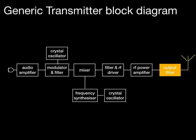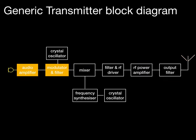Connected to the output filter you must have an RF power amplifier. So that's three boxes ticked without having to remember too much. After the audio amplifier, you've got a box with two inputs and one output — that's the modulator and filter. One of the inputs is a crystal oscillator and the other is the output from the audio amplifier. So if you have a box with three connections — two inputs and one output — it will either be a modulator or a mixer.